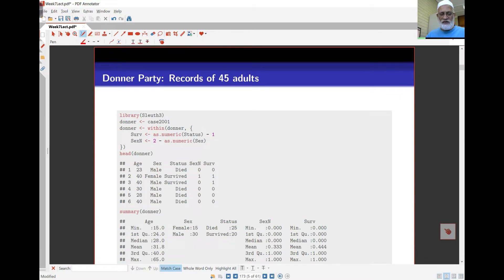Here's the record of the data. It's in the sleuth book package, sleuth3, and the case study is case2001. What we're doing here are two commands that you've seen before. The with data frame makes some calculations using the variables stored underneath the particular data frame.